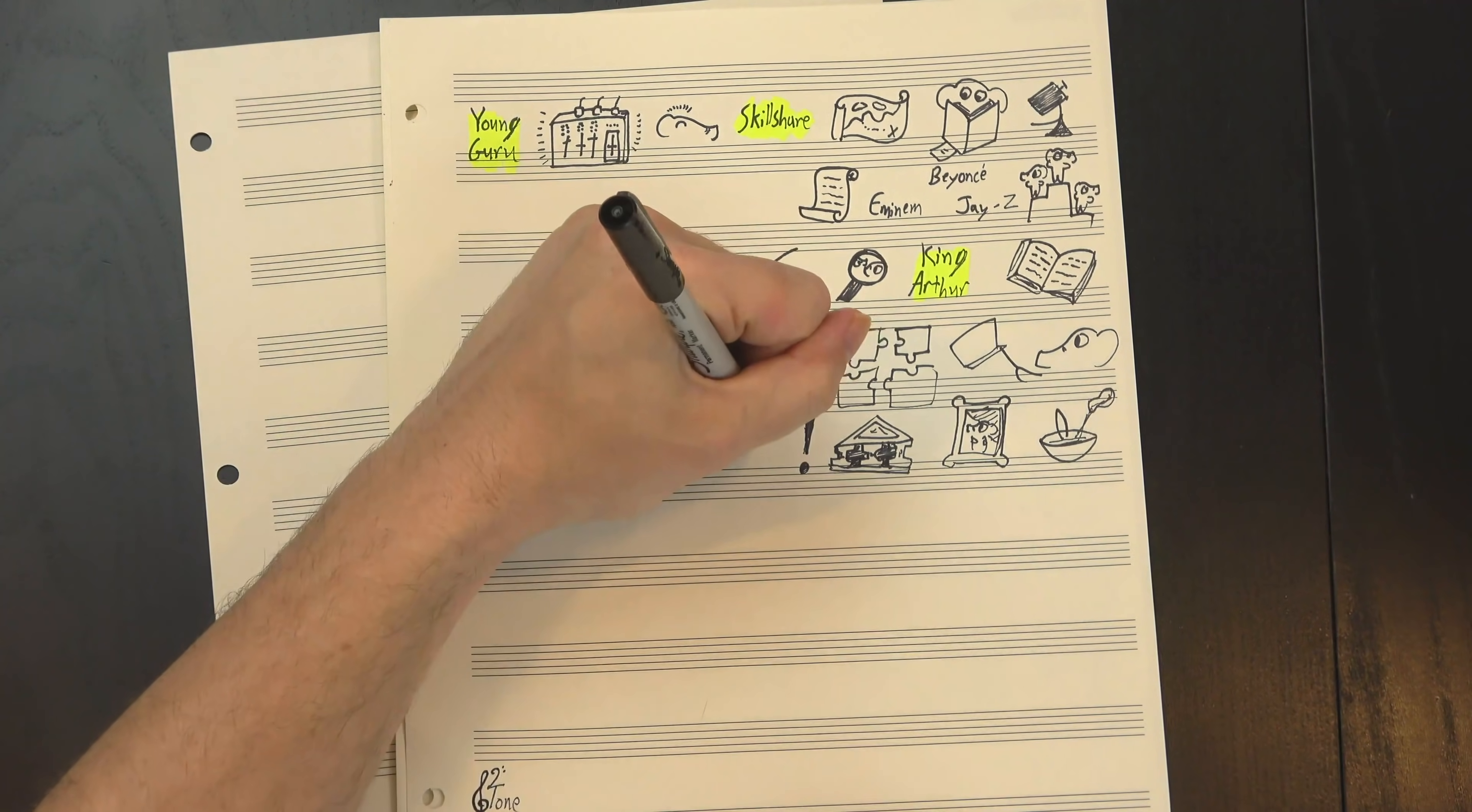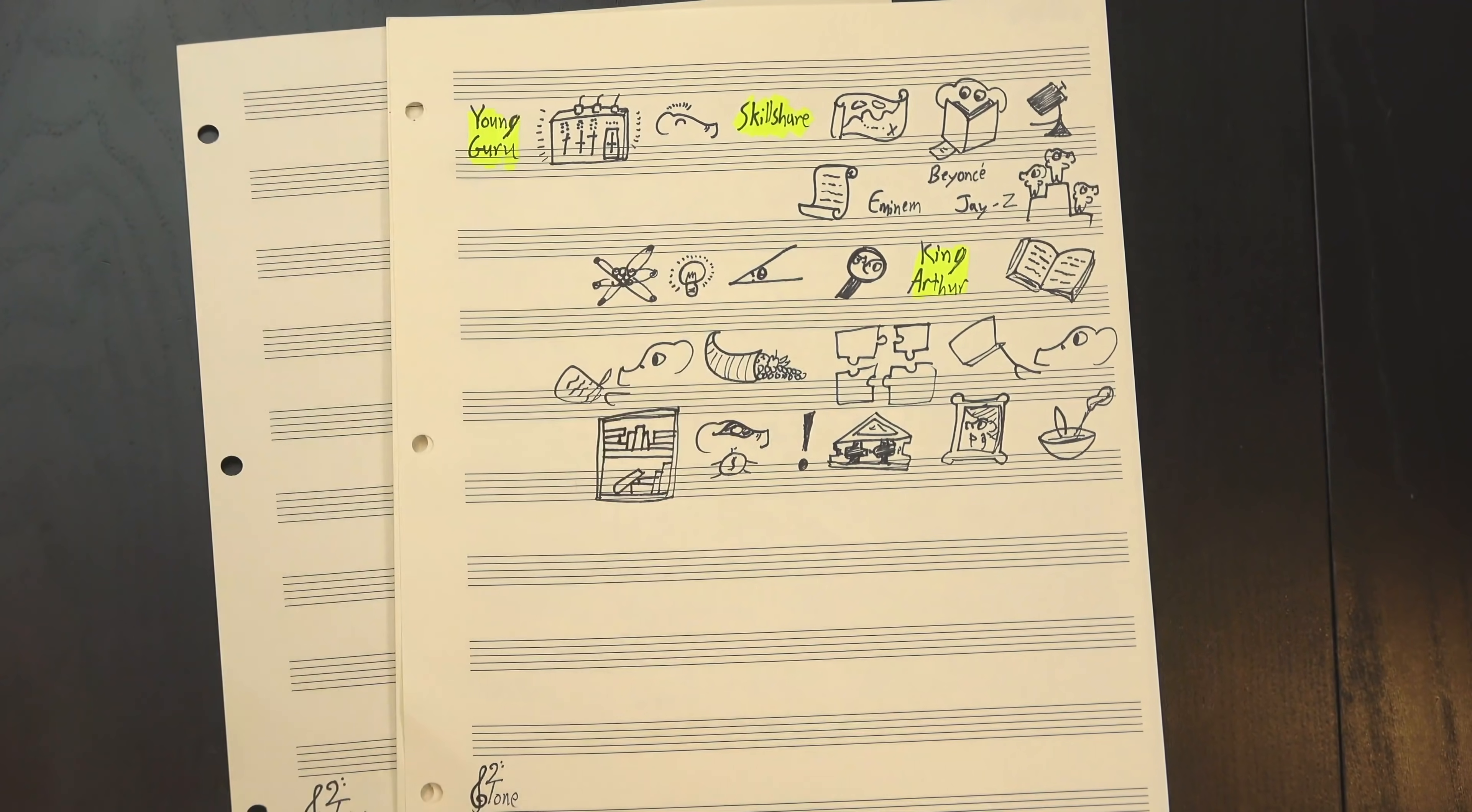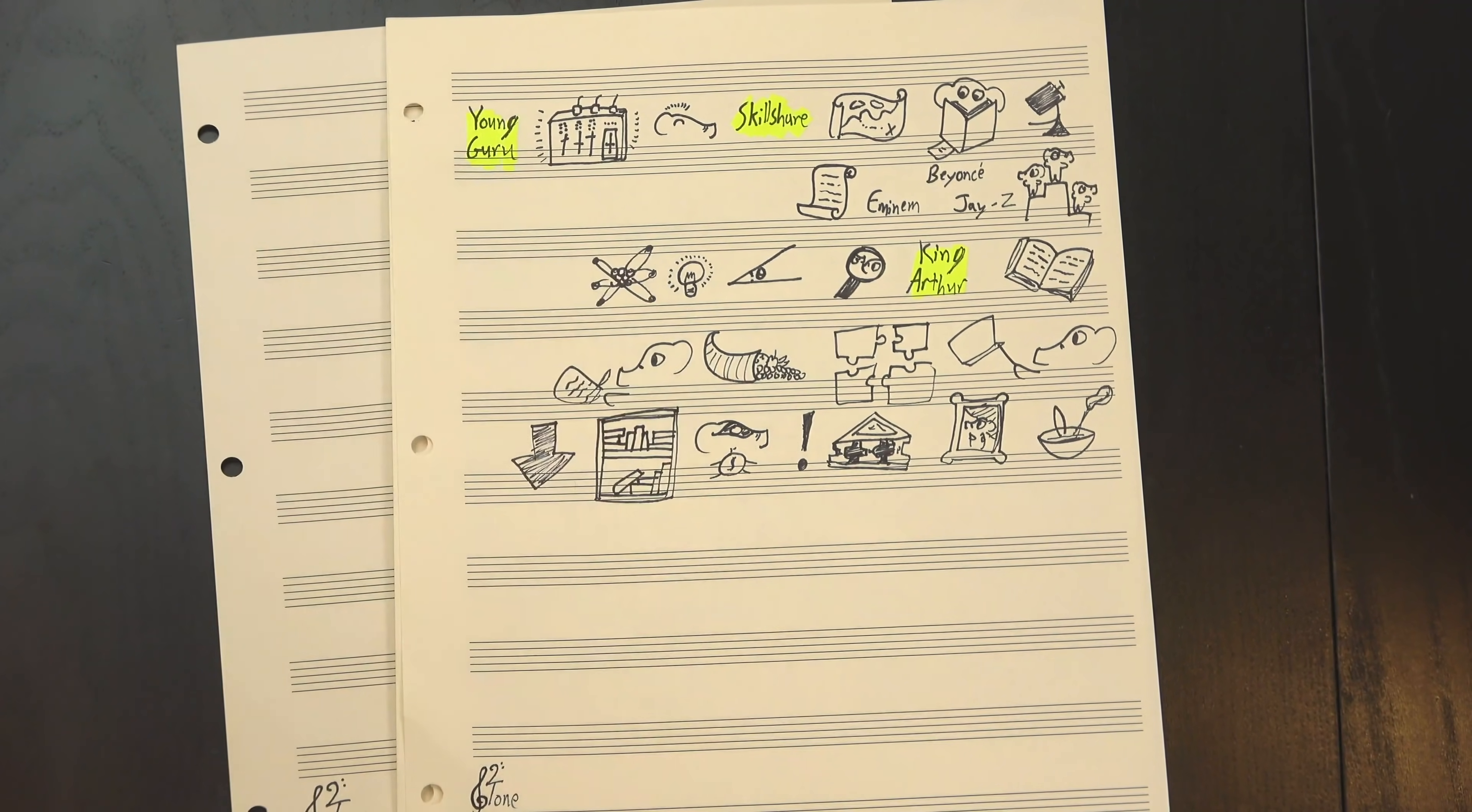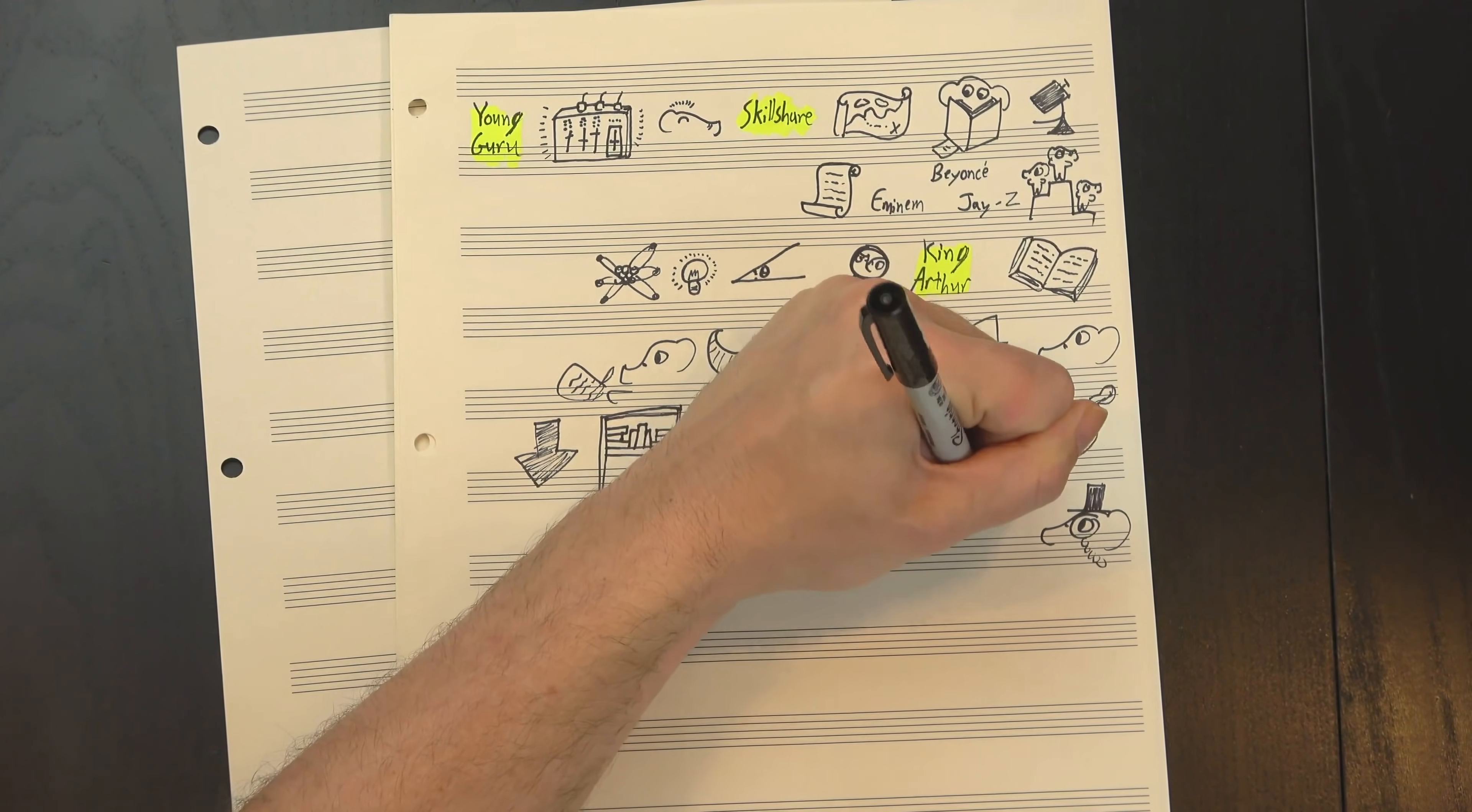And, to get you started, Skillshare's even offering 12Tone viewers two months of free premium membership, with full access to their entire library. All you have to do is click the link in the description, and if you like it, sticking around is super affordable, with premium plans starting under $10 a month.